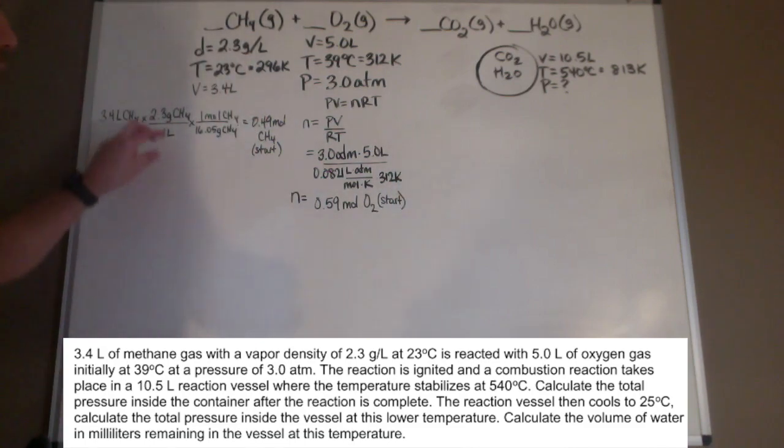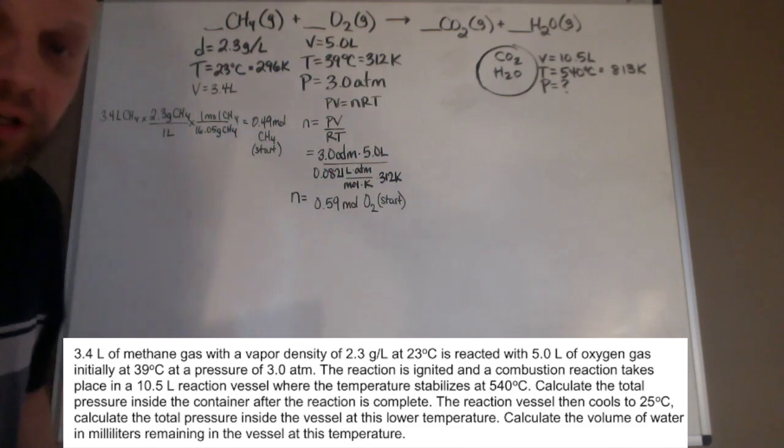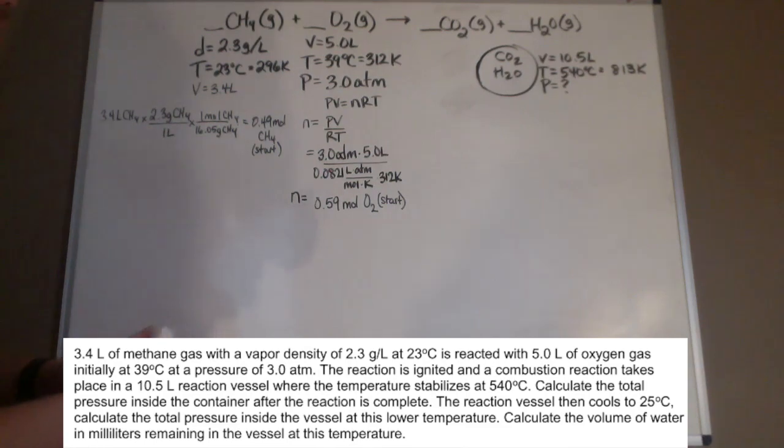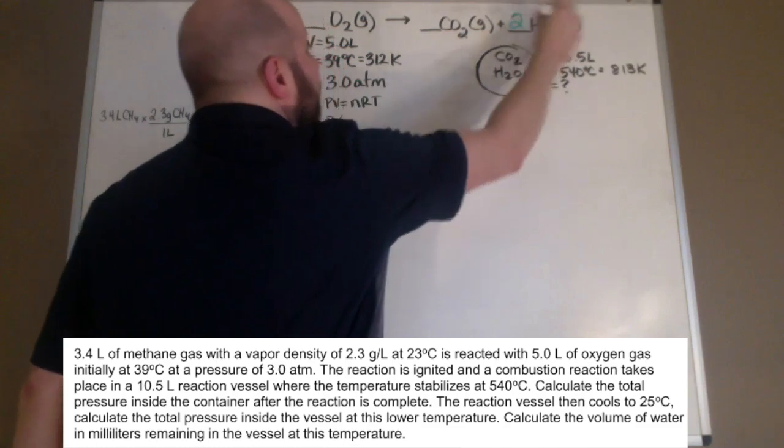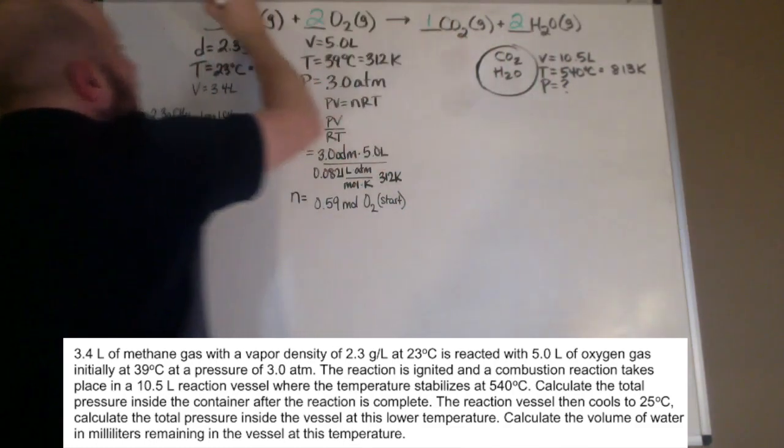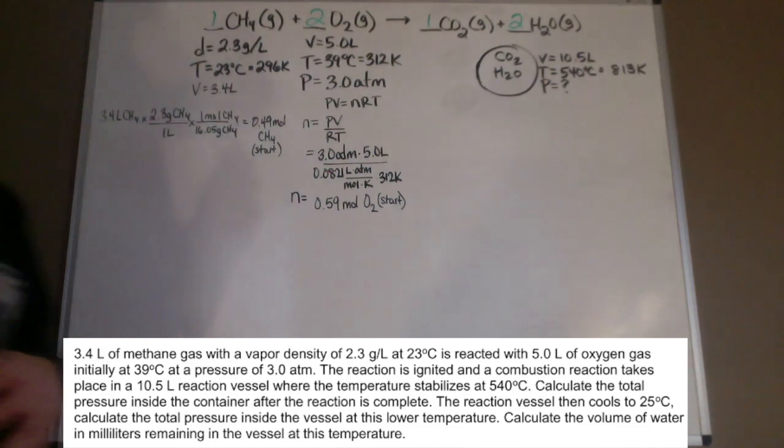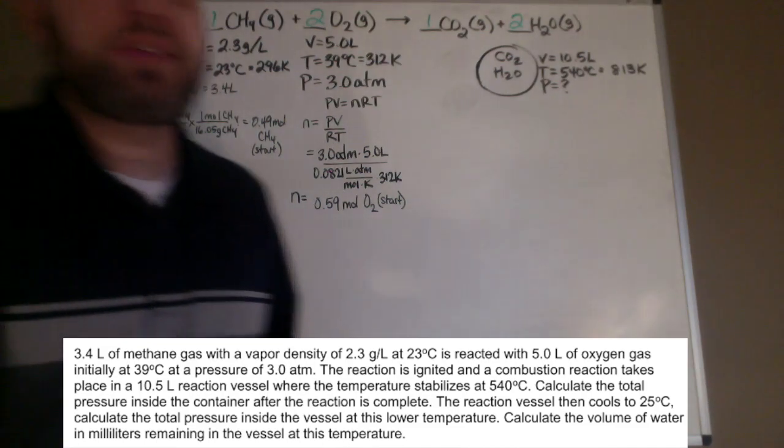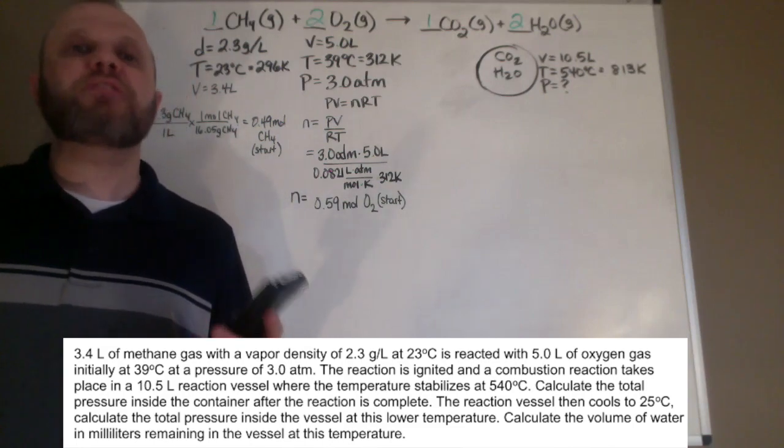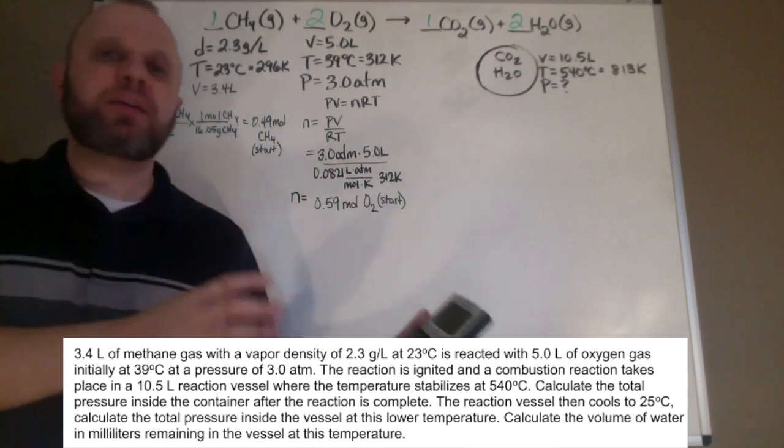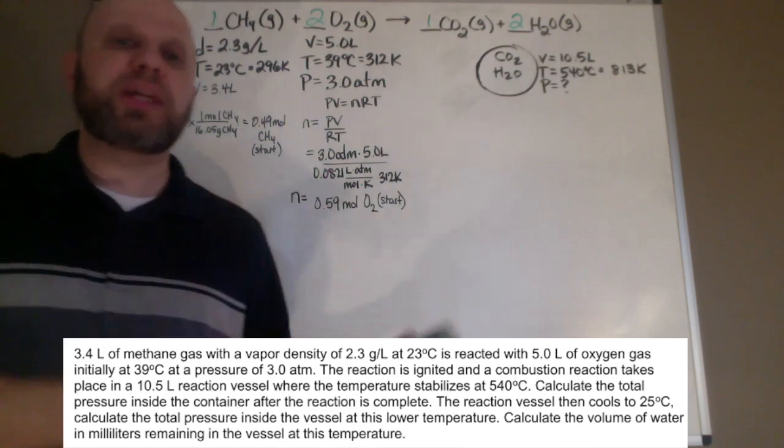Now we know our starting moles of methane and oxygen. In order to actually use these, we're going to have to balance our equation. CH4 plus O2 goes to CO2 plus H2O. I have one carbon on each side, four hydrogens, so I'm going to put a 2 here. That's 2 plus 2, so put a 2 here. The coefficients are 1, 2, 1, 2.